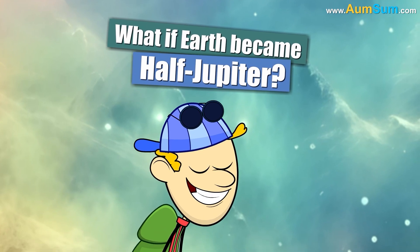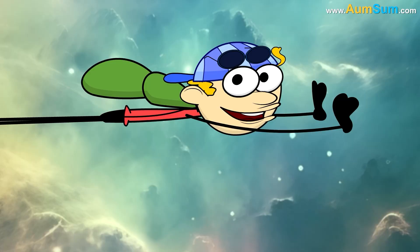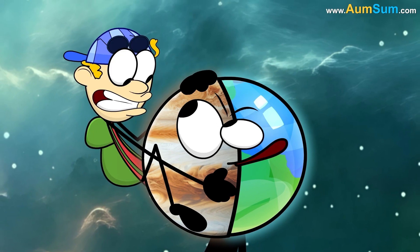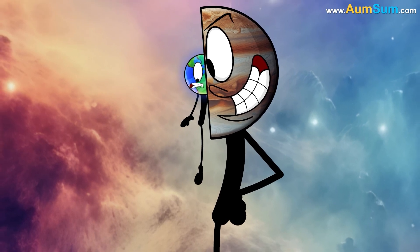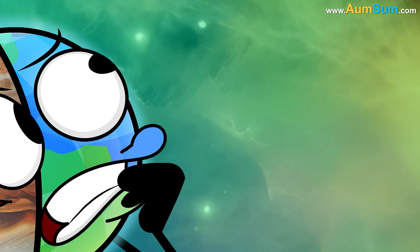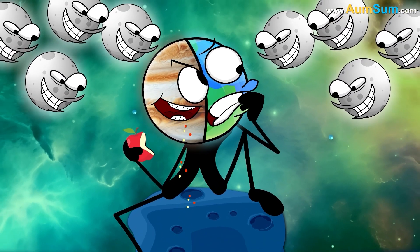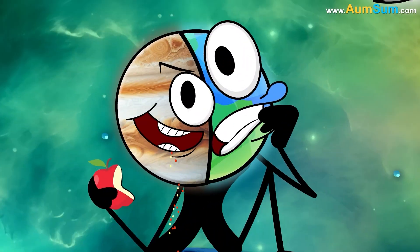What if Earth became half Jupiter? Firstly, if Earth became half Jupiter, Earth's Jupiter half may become way too big. Secondly, if Earth became half Jupiter, Earth's Jupiter half may always be accompanied by Jupiter's 100 moons.